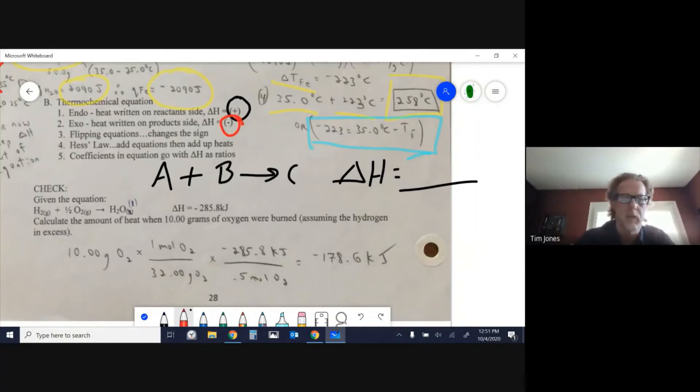If it's endothermic or positive delta H, include it on the left side with the reactants. If it's negative or exothermic, put it on the right side with the products. In this case, if it had been endothermic, I would have written some amount of heat on the left, like 25 kilojoules.